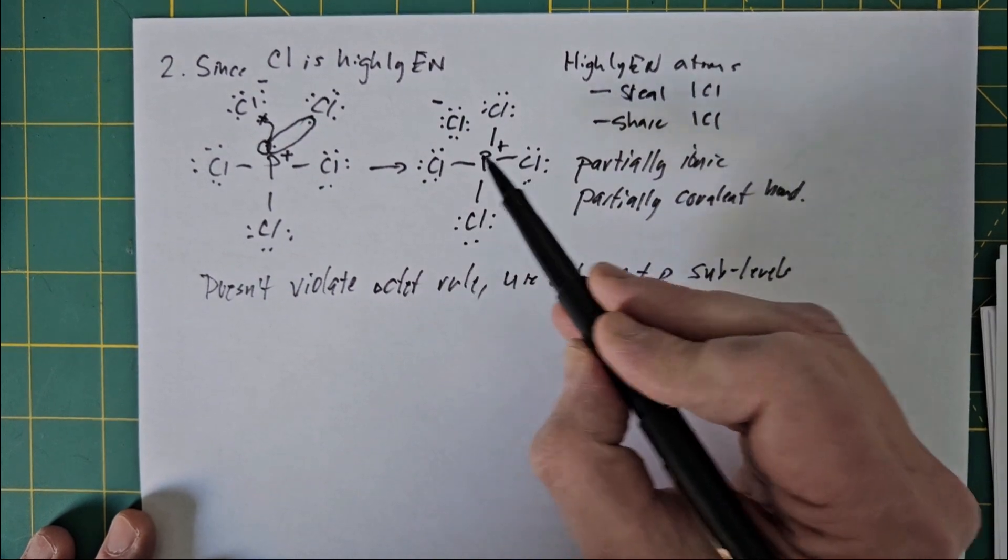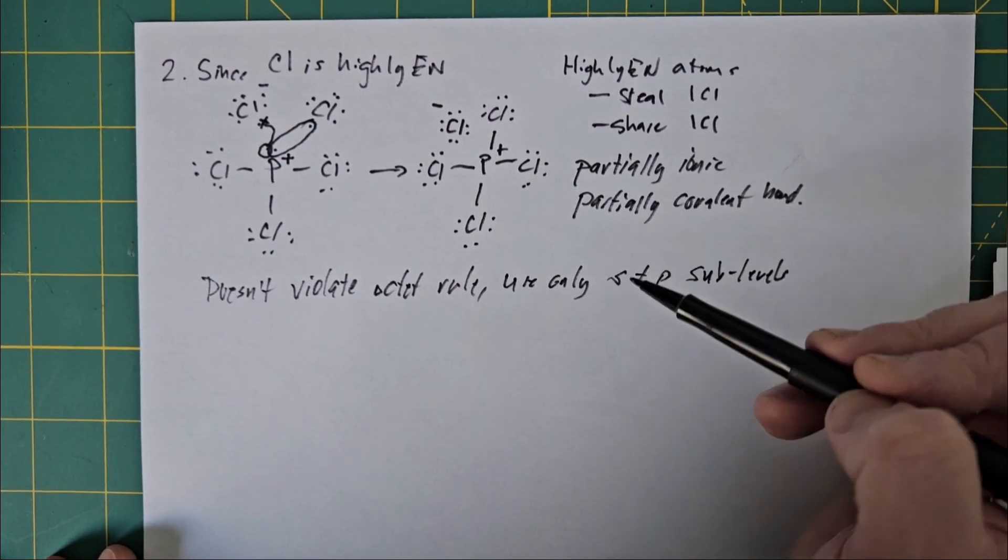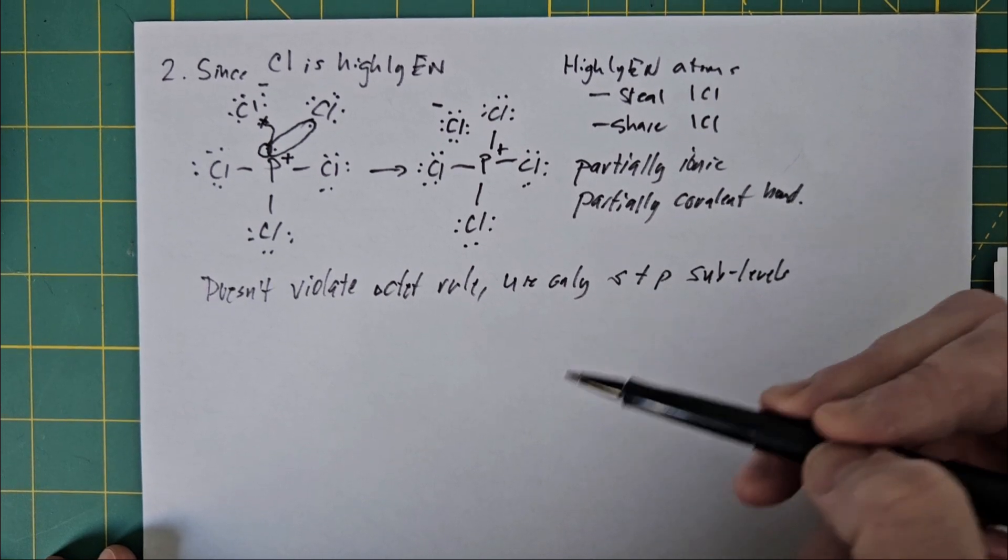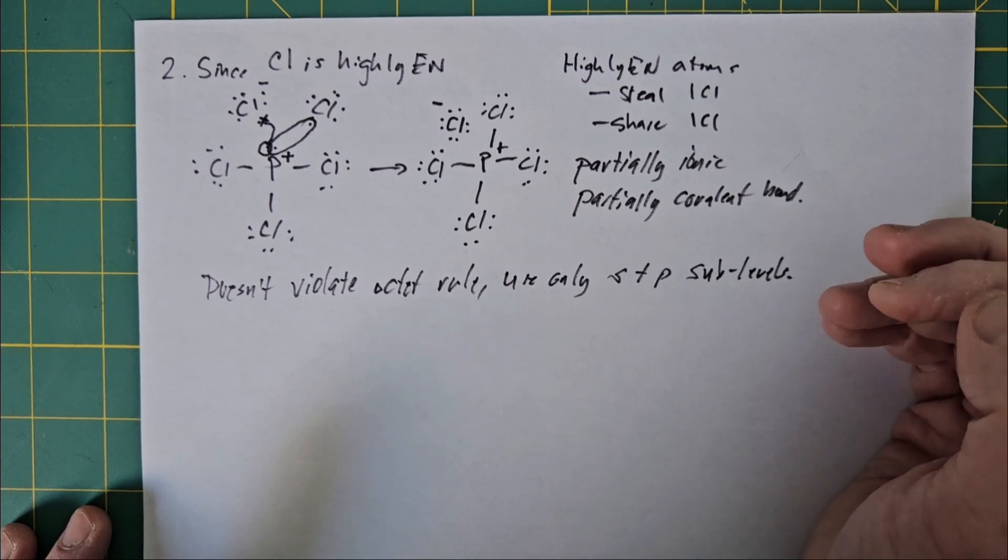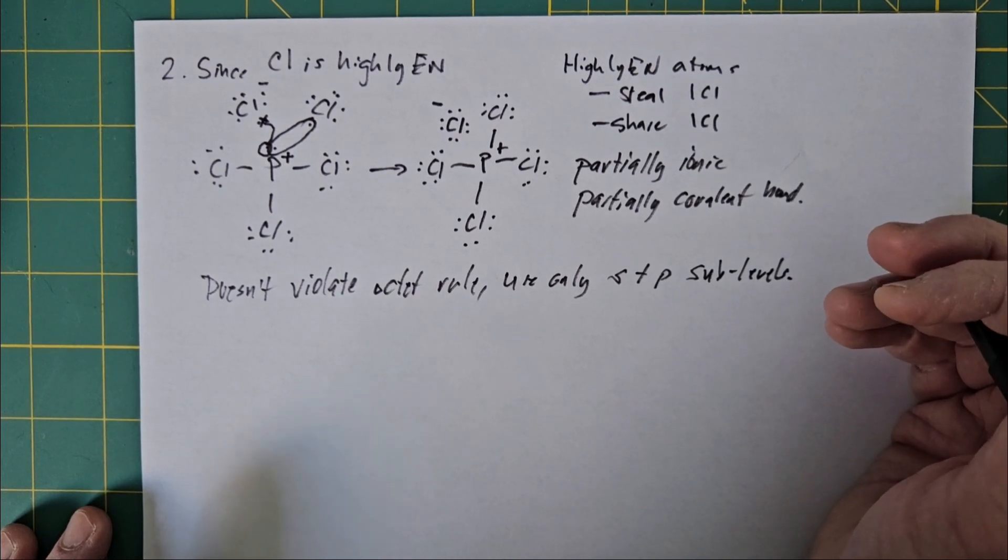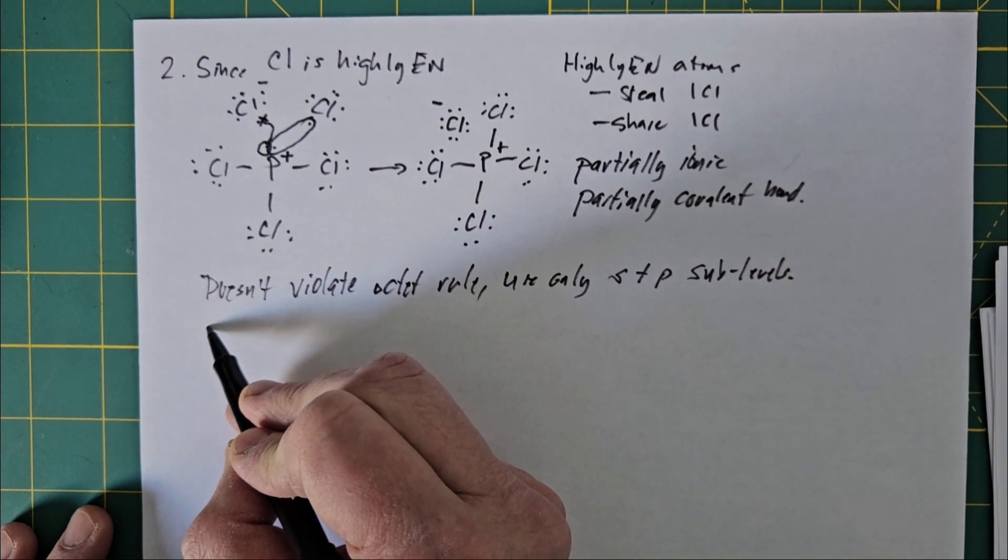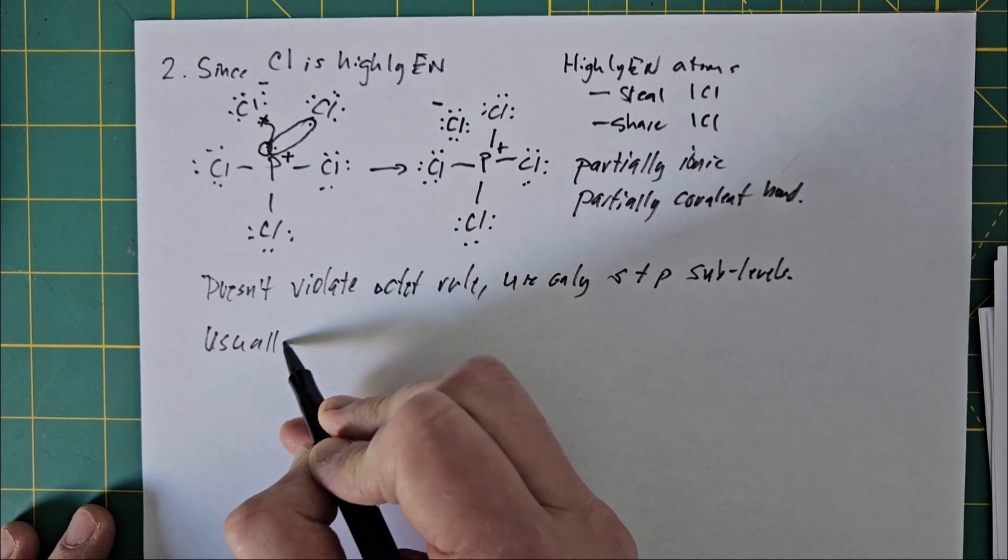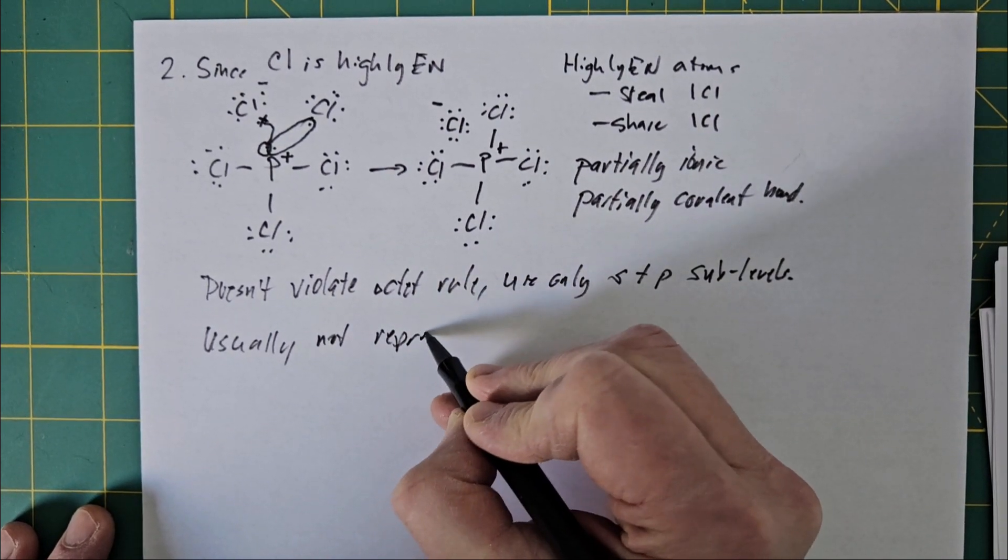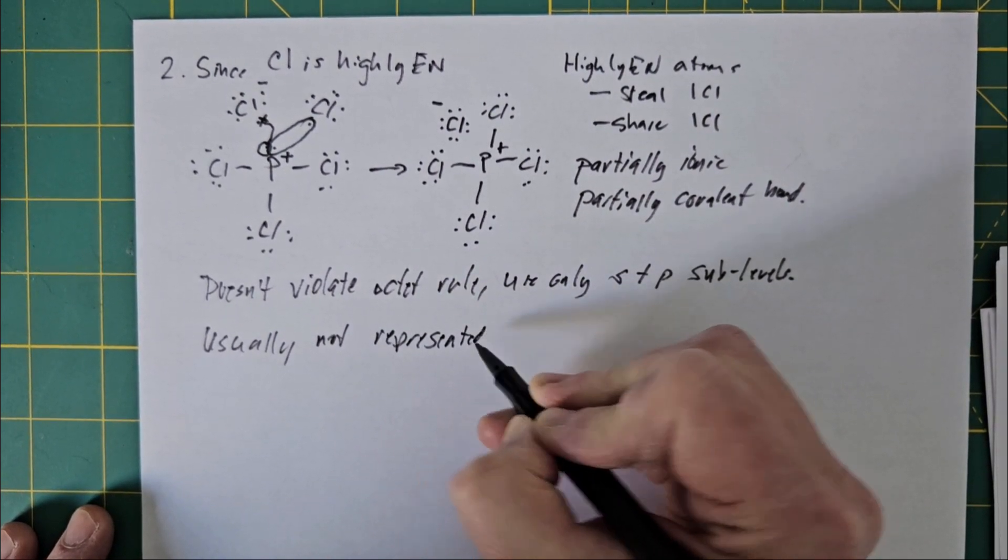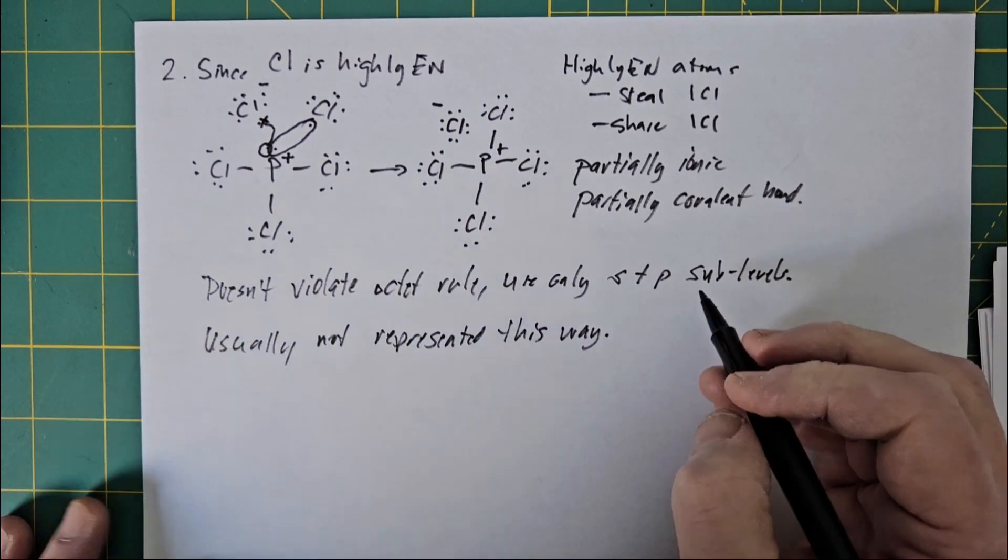The drawback is the structure is a little more complicated, because the bonding here is actually a little bit more complicated than conventional straightforward covalent bonding. The big drawback is, if you look up phosphorus pentachloride, it's usually not represented this way. But it is the best explanation about what's happening in the bonding.